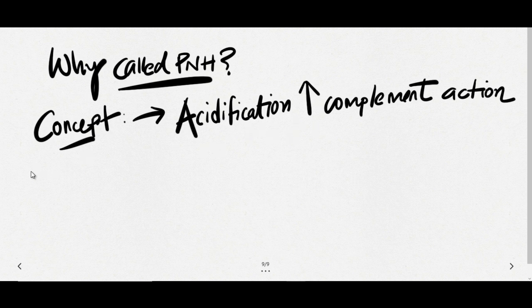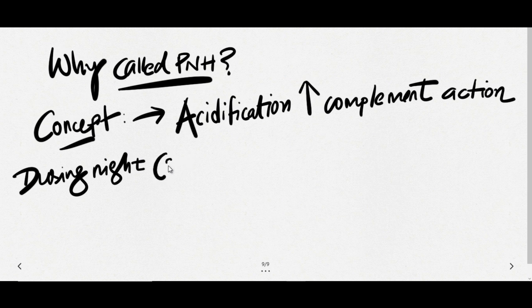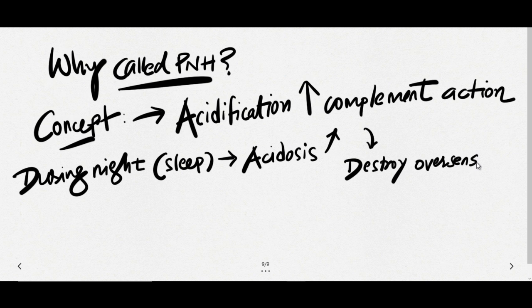Now what happens is that in this patient during night time when they go to sleep, that's why it is known as nocturnal. During night when person is sleeping there will be acidosis and this acidosis will increase the complement activity. This complement will destroy the RBC. So there is complement mediated destruction of RBC which are already over sensitive to the complement action. This leads to episodes or paroxysms of hemoglobinuria.